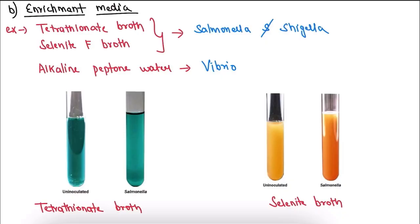The second category is enrichment media. We have tetrathionate broth and selenite F broth, which are used for both Salmonella and Shigella. Alkaline peptone water is used for isolation of Vibrio.